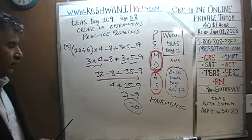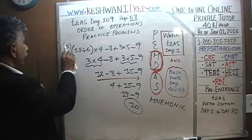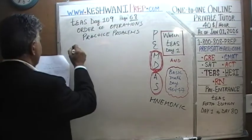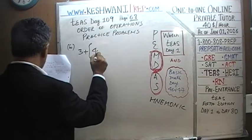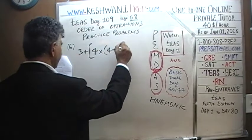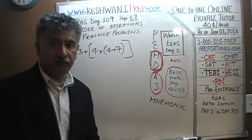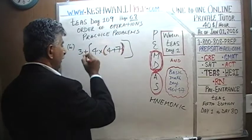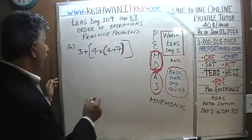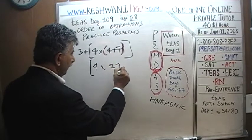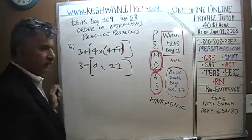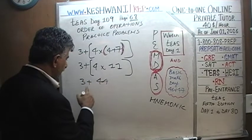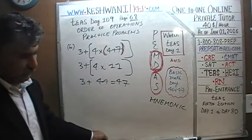One last problem: 3 plus open parenthesis 4 times (4 plus 7) close parenthesis. When we have more than one parenthesis, the rule is to do the innermost first. The innermost is (4 plus 7), which equals 11. So we have 3 plus (4 times 11). Now 4 times 11 is 44. And 3 plus 44 is 47 — the final answer.